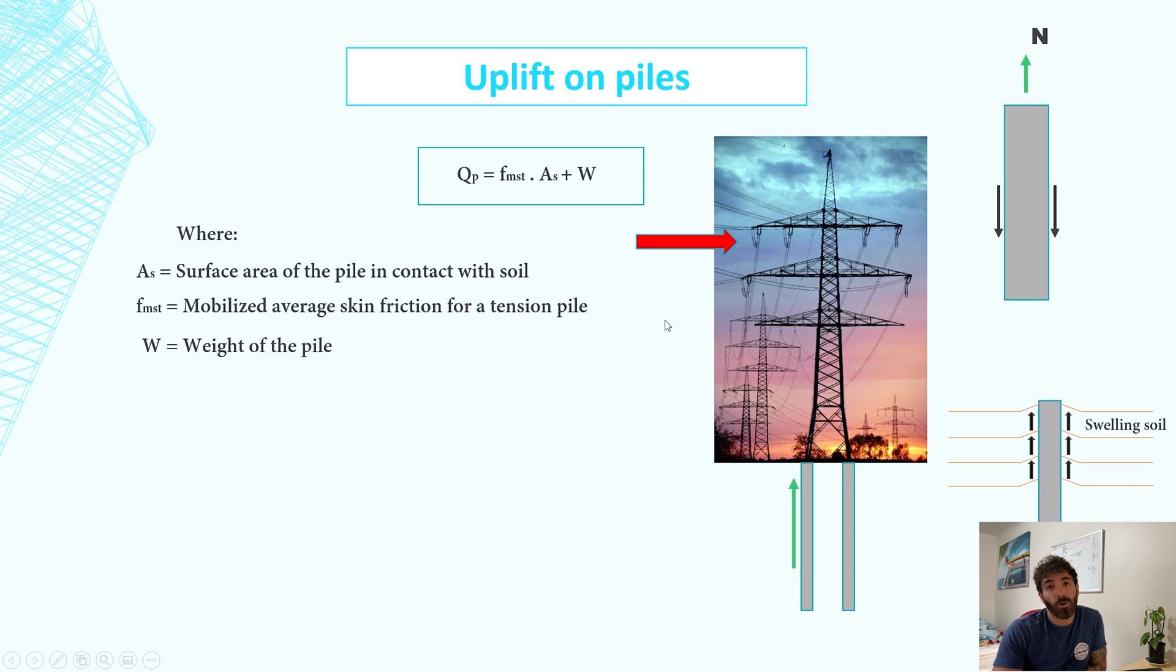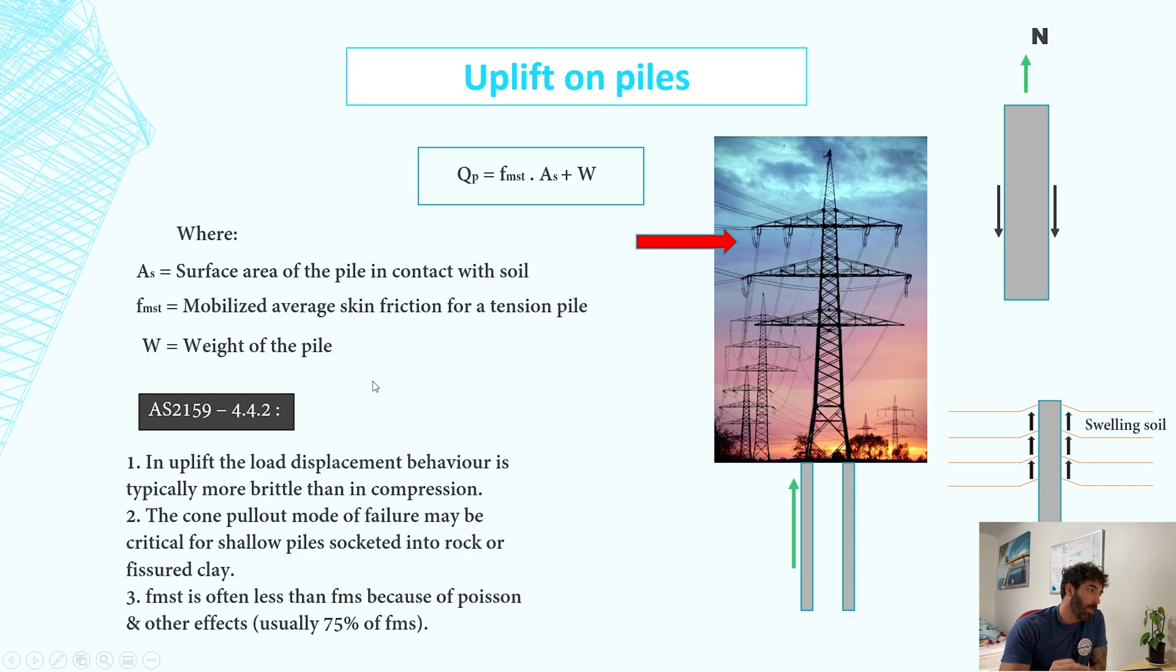AS 2159 clause 4.4.2 states that in uplift, the load-displacement behavior is typically more brittle than in compression. The cone pullout mode of failure may be critical for shallow piles socketed into rock or fissured clays. You've got a cone failure here, so it goes diagonally from the bottom of the pile. f_mst, which is the skin friction in tension, is often less than f_msc, which is the skin friction for compression, because of Poisson and other effects.